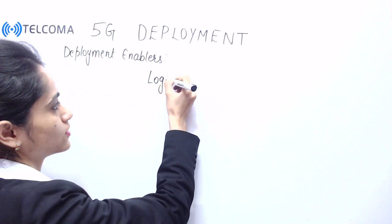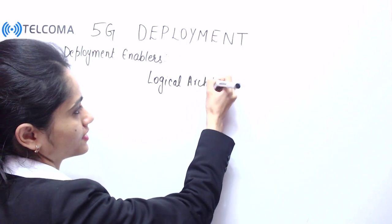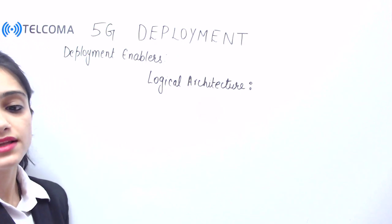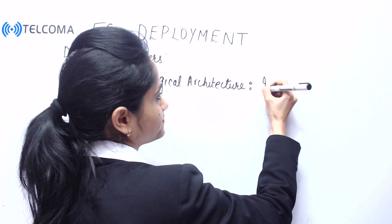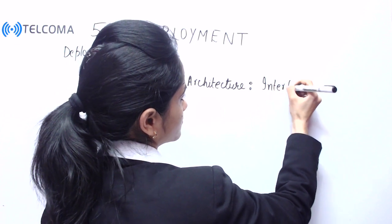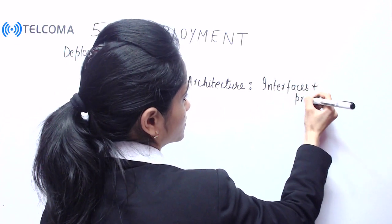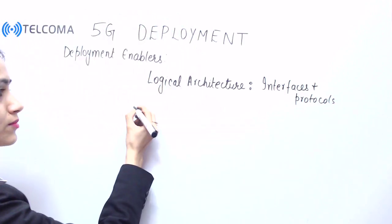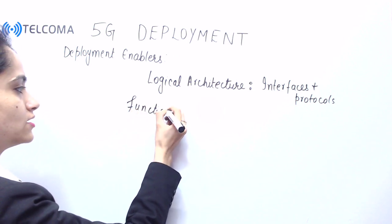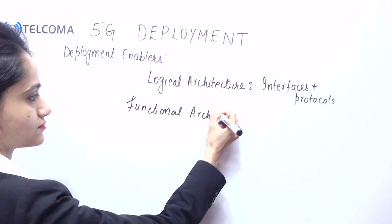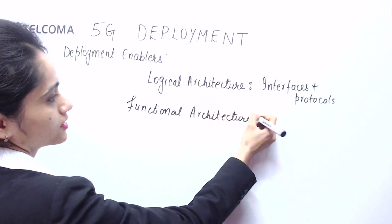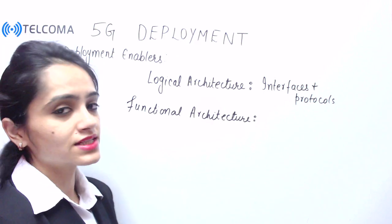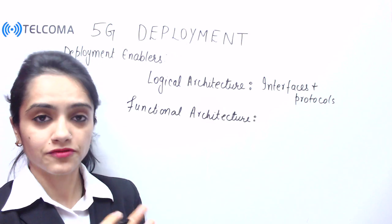In the 5G logical architecture, it enables specifications of interfaces and protocols. Next we talk about functional architecture. We have two types of architecture: logical and functional. Functional architecture describes the integration of network functions in an overall system.